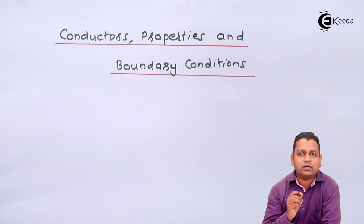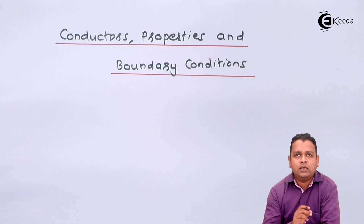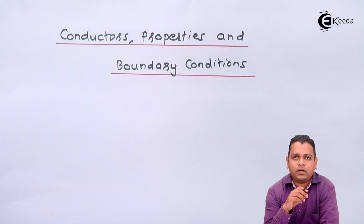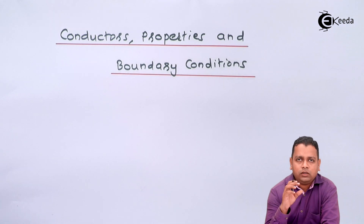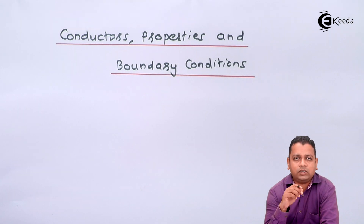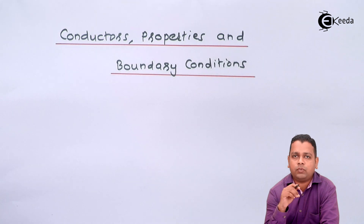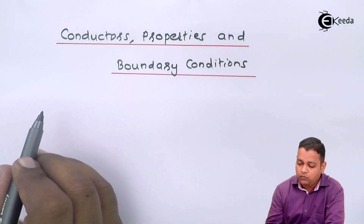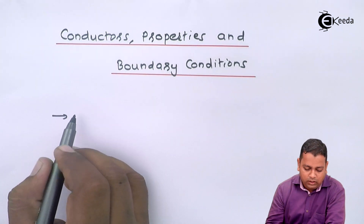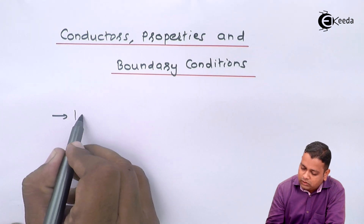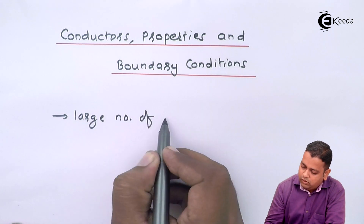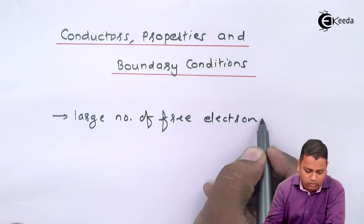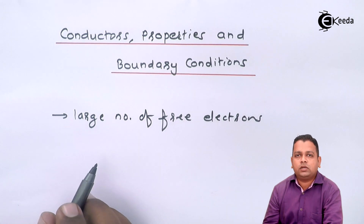In semiconductors, for example silicon and germanium, that energy band gap is short with respect to dielectrics, where on application of a certain electric field the electron can pass from the valence band to the conduction band. So for conductors, we can note the first point: large number of free electrons.